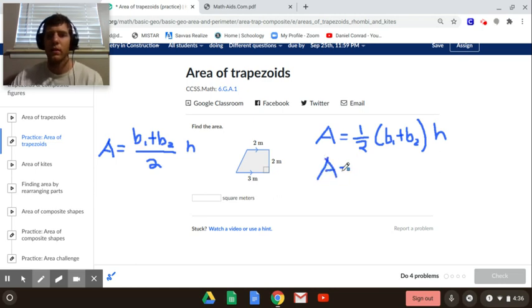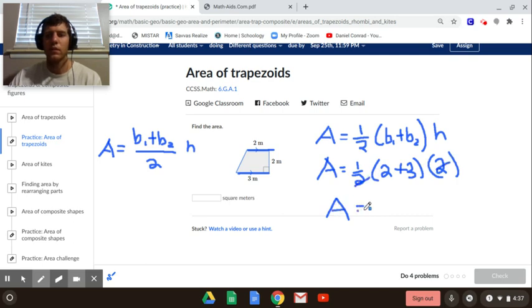So here we're going to have 1 half. The two bases are the two sides, the lengths of the two sides that are parallel. So 2 and 3 are going to be our bases. It doesn't matter which one you call base 1 and base 2 because we're just adding them together. So 2 plus 3. And then our height here is the vertical distance between those two bases, which is 2. So 1 half times 2, those cancel. The area here is going to be 5 meters squared.